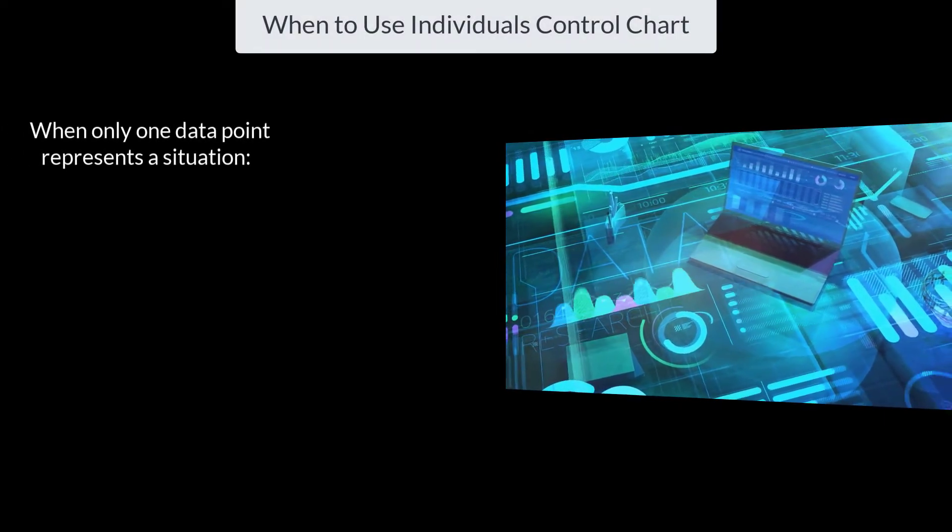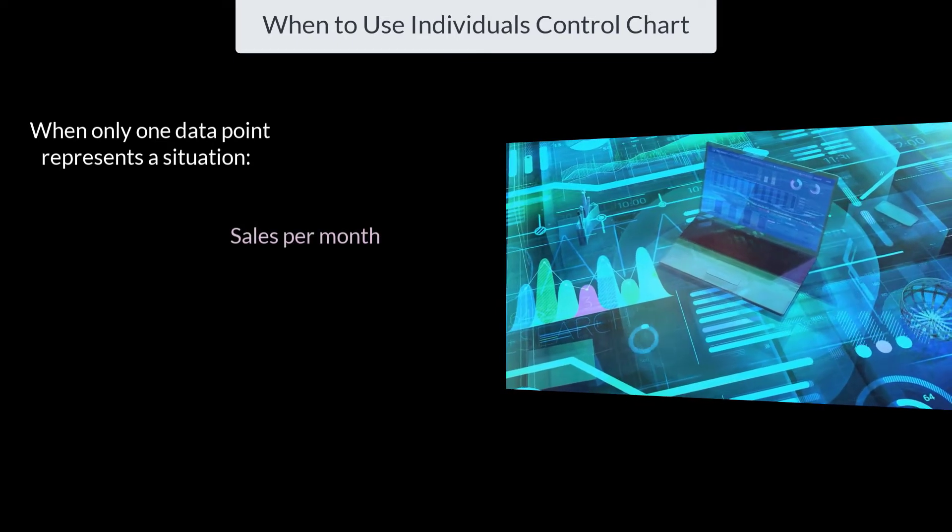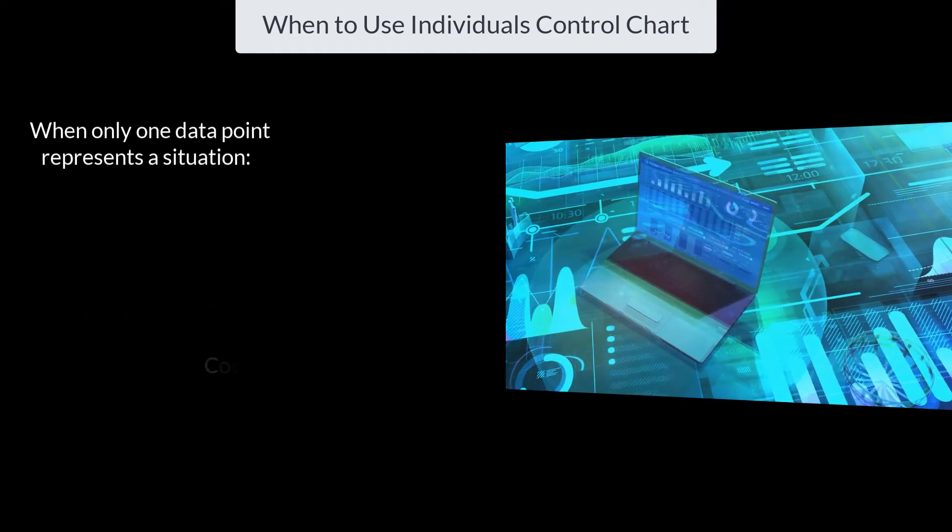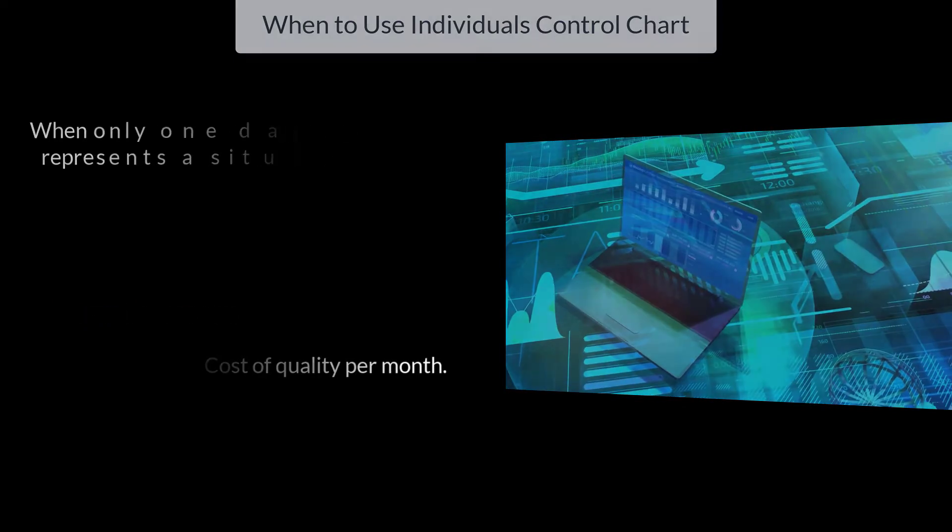It could be sales per month, downtime per day for a plant or a piece of equipment, or the cost of quality per month.